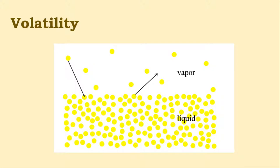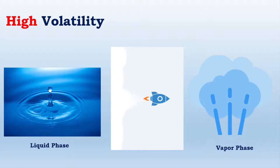Volatility can also describe the tendency of a vapor to condense into a liquid. At a given temperature and pressure, a substance with a high volatility is more likely to exist as a vapor.